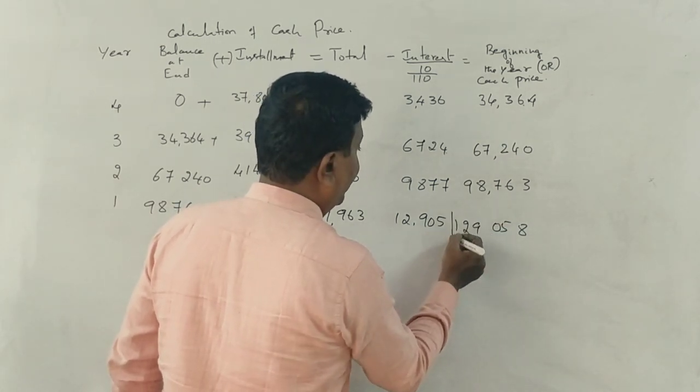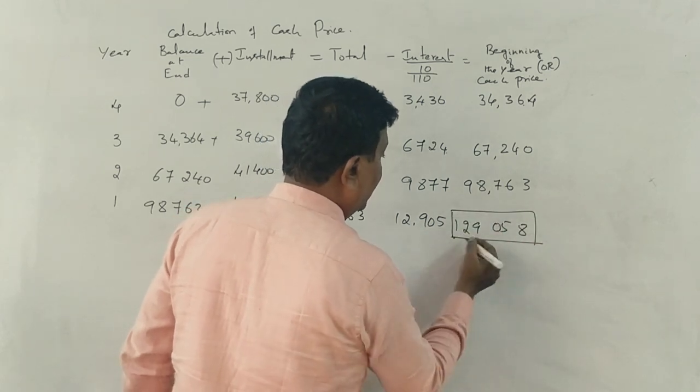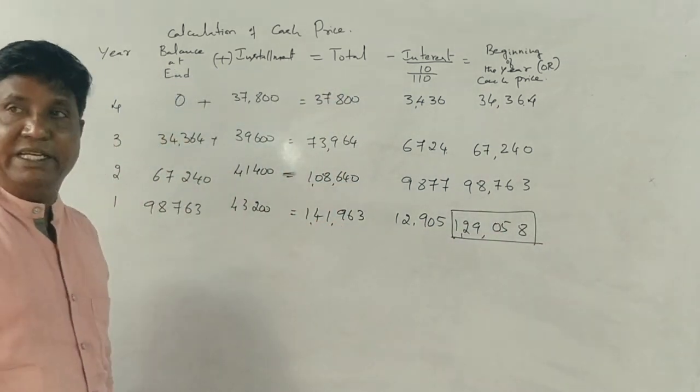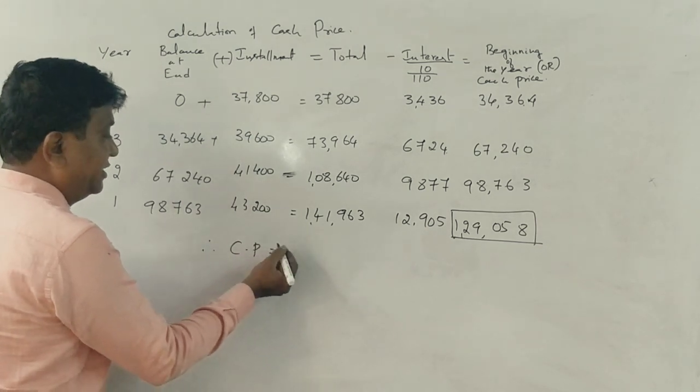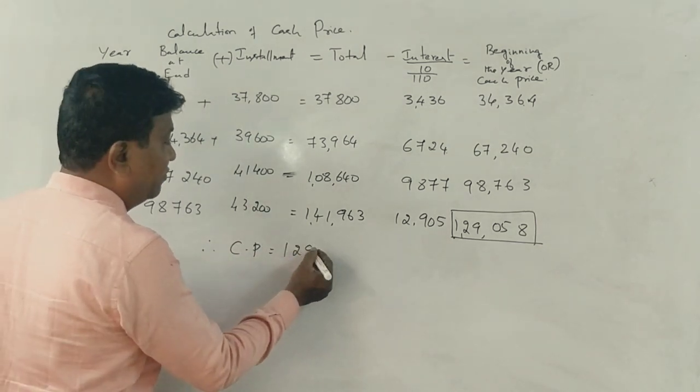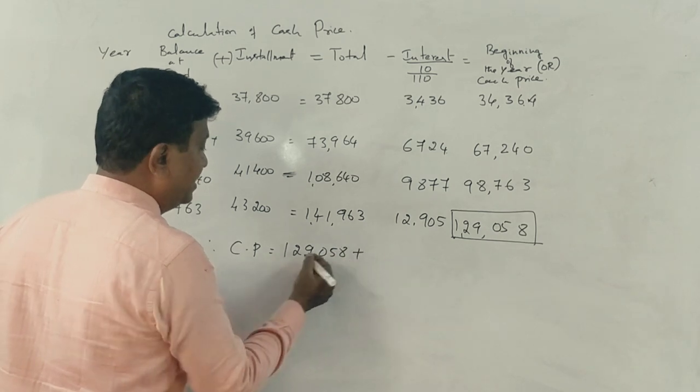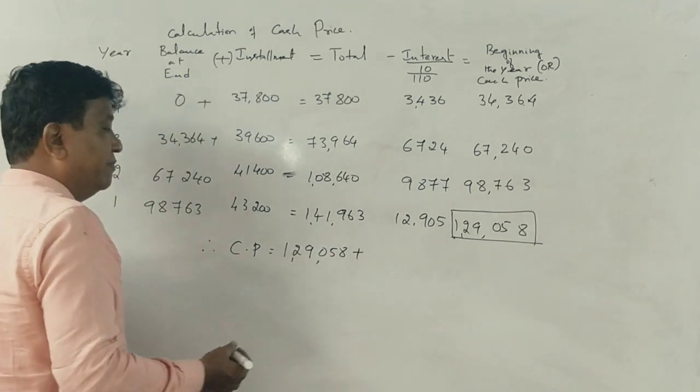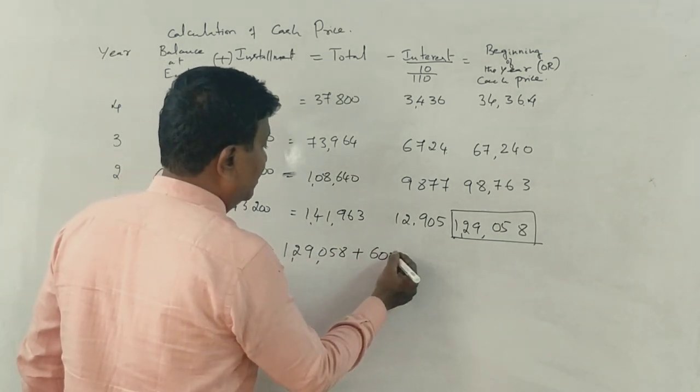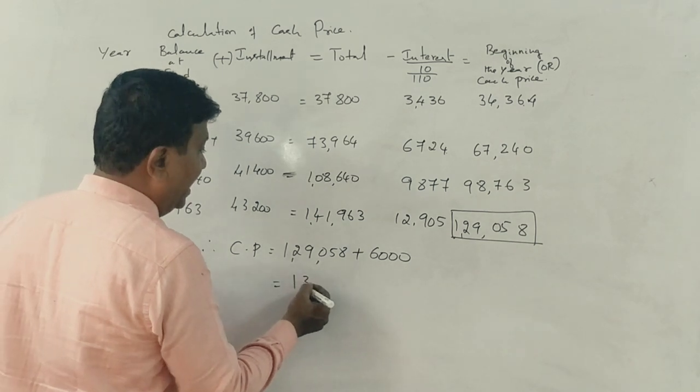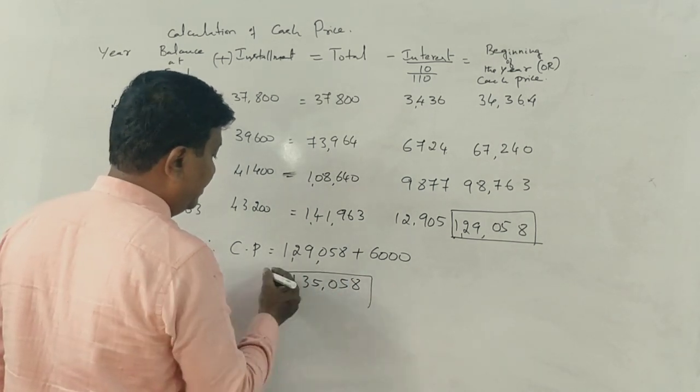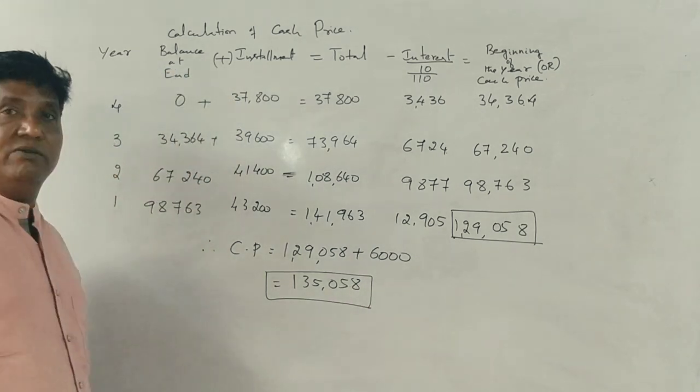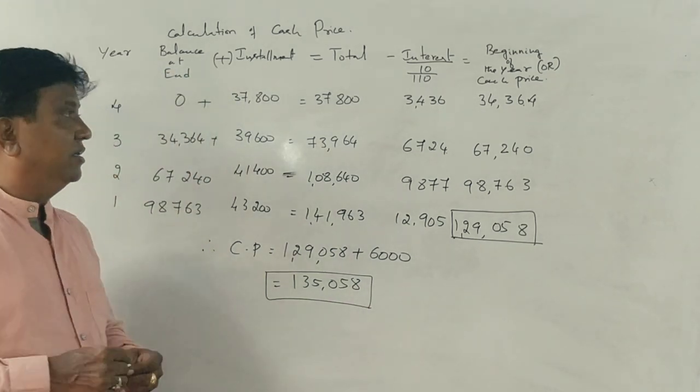Therefore cash price is equals to one lakh twenty-nine thousand fifty-eight plus down payment of 6,000. Final answer: one lakh thirty-five thousand fifty-eight rupees, 1,35,058 rupees is the cash price of that asset.